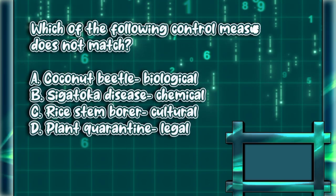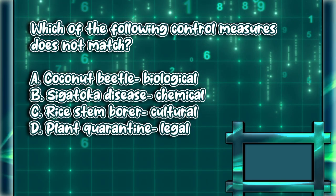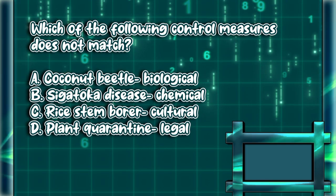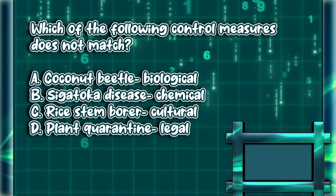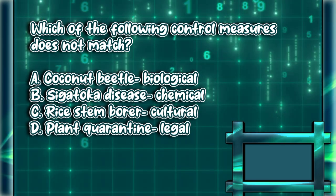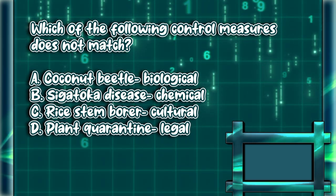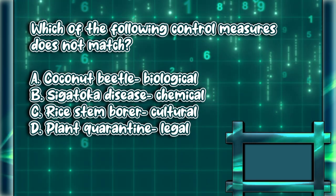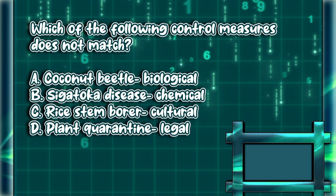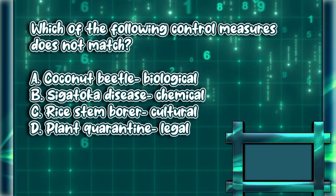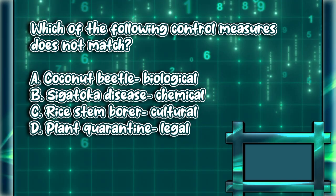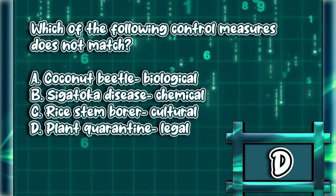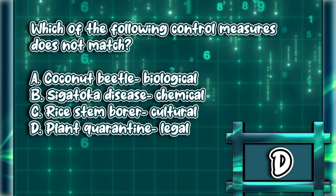Which of the following control measures does not match? A. Coconut beetle — biological. B. Sigatoka disease — chemical. C. Rice stem borer — cultural. D. Plant quarantine — legal. The answer is letter D.